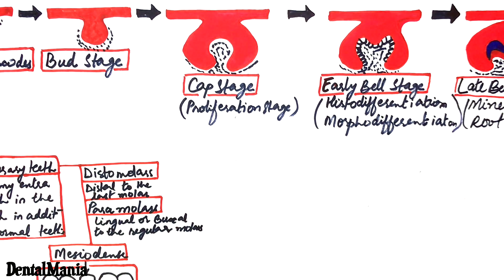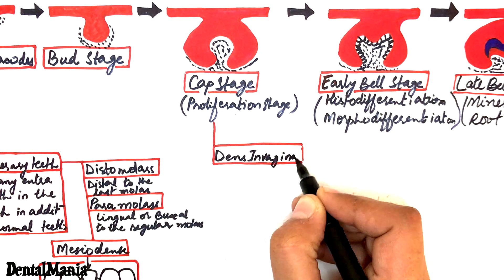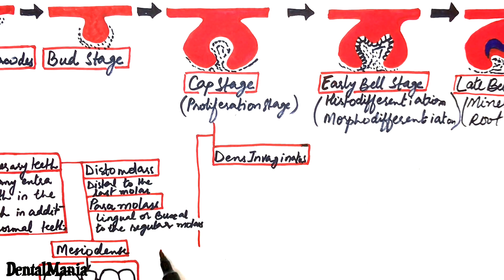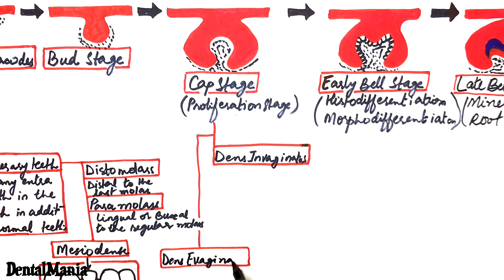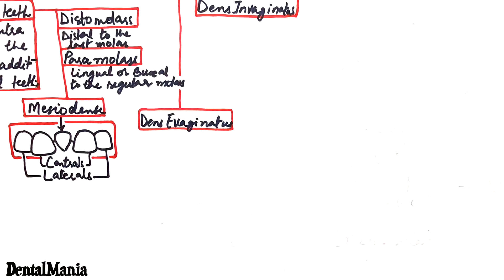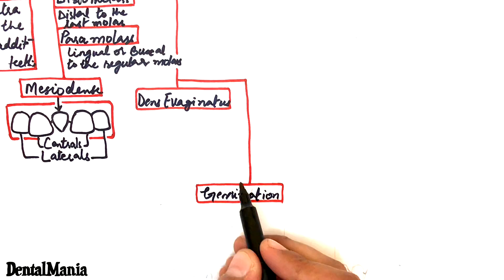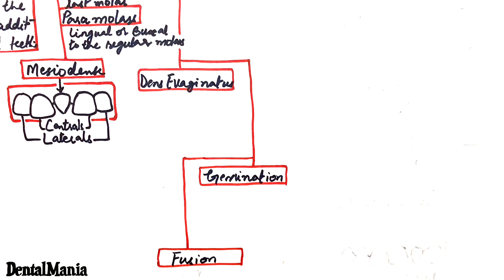Defects in the cap stage of tooth development give rise to the following pathologies which are the dens invaginatus or dens in dente, the dens evaginatus, gemination, fusion and tubercle formation.